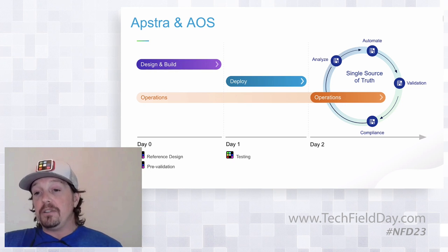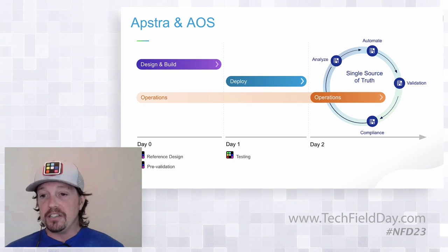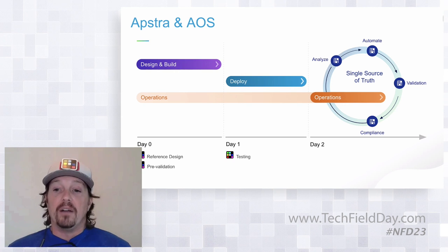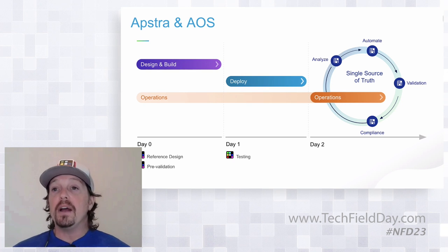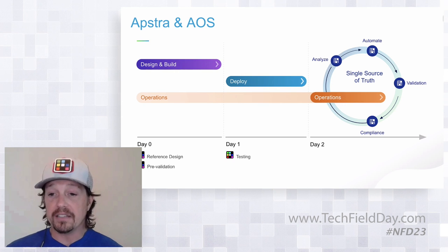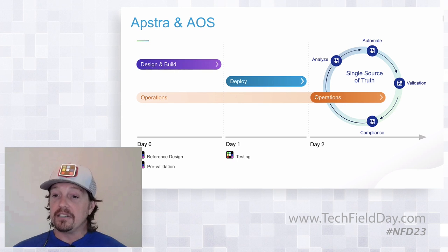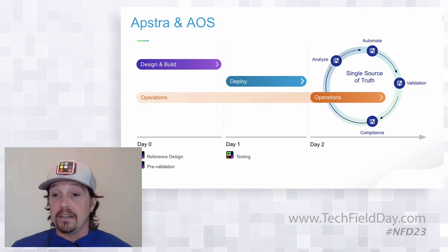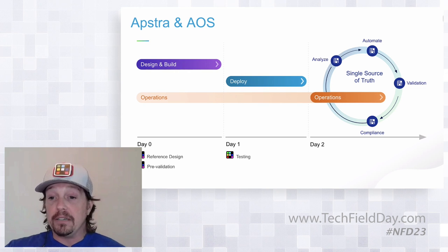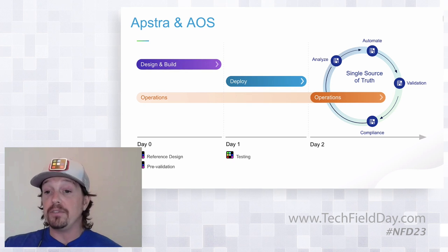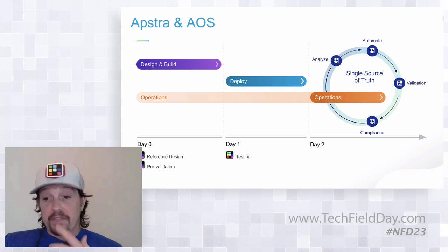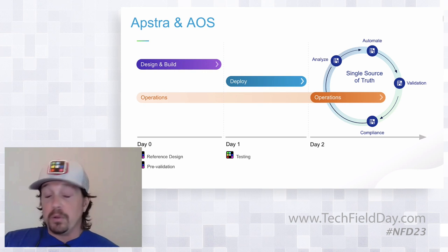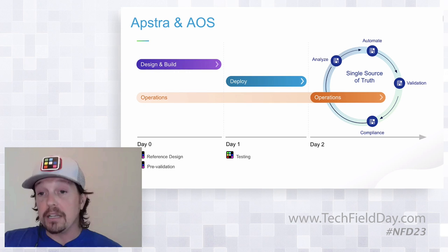With AOS, you get the interoperability, the pre-validations, the normalizations, the visibility, the maintenance workflows — everything you see as part of Appstra and AOS. Things like intent-based analytics, data center interconnect, and workflows — you get all of that with Enterprise Sonic. Now you actually have a way to choose and control your network and adopt a more open, more cost-effective solution if you desire, or deploy a homogeneous Sonic environment if you want.